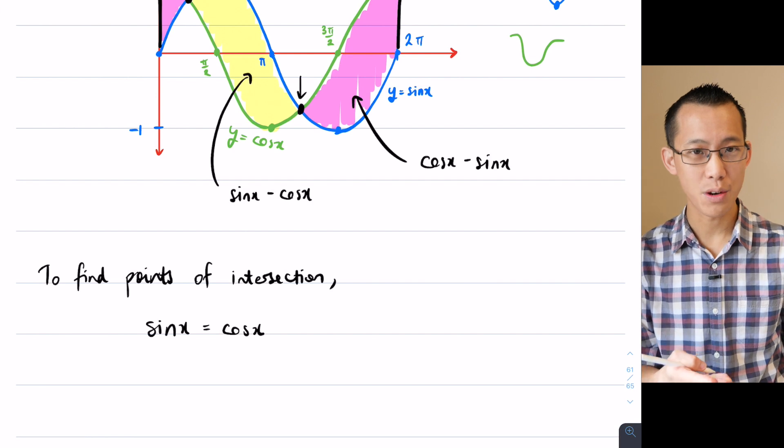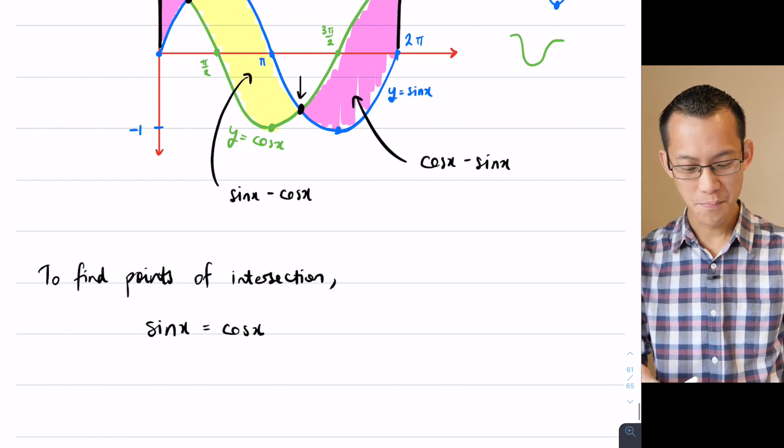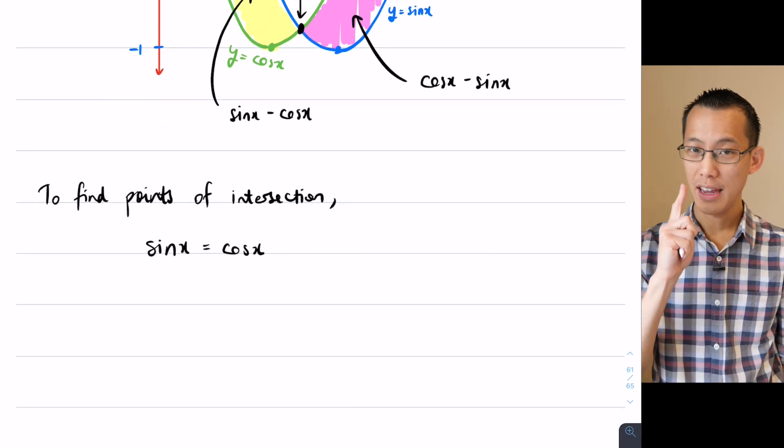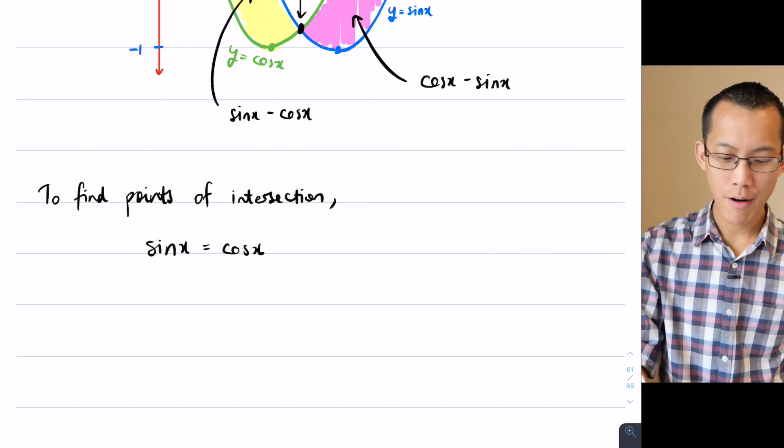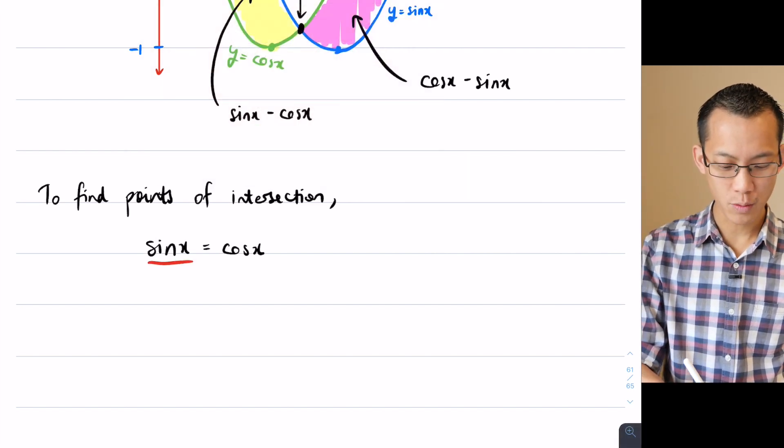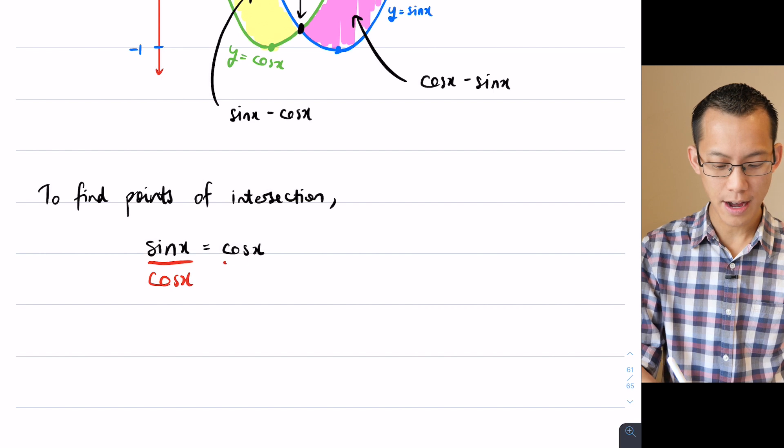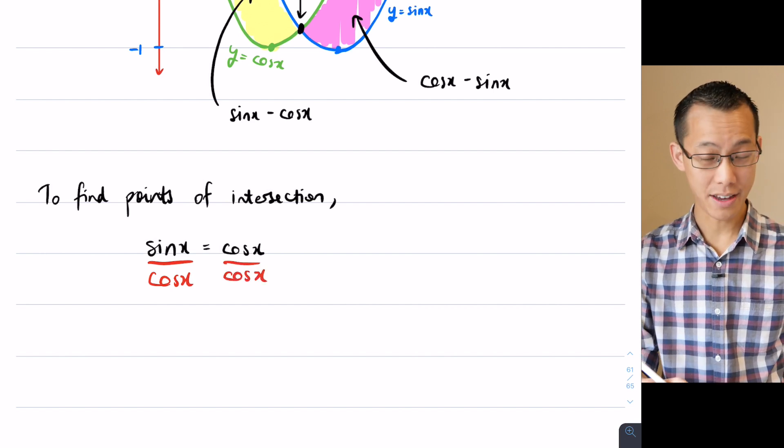Think about the identities you know to turn these two trig functions into one. Maybe your brain is ticking along and you've recognized what I can do to both sides is divide through by cos x.